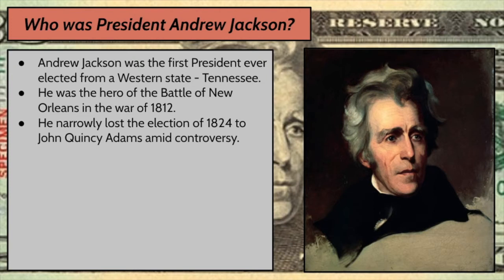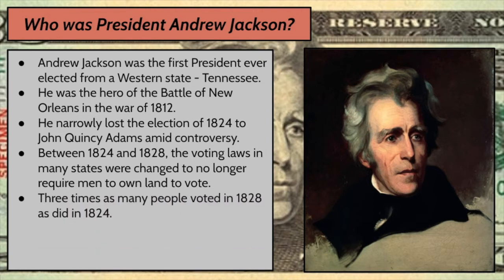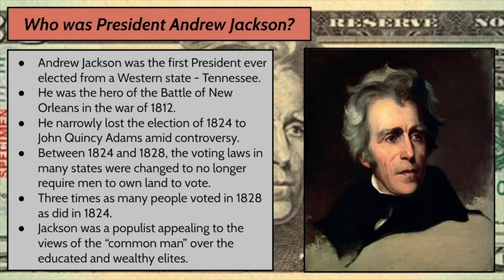The amount of disagreement and unpleasantness after that election was probably not all that different from the discord we had after the election of 2016. Between 1824 and 1828, voting laws changed in many states — before that, you had to be a white land-owning male, but many states got rid of the land ownership requirement. Three times more people voted in 1828 than in 1824. That's significant, and because the composition of the electorate changed, the results changed. Andrew Jackson won in 1828 overwhelmingly.